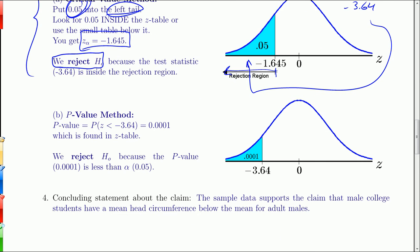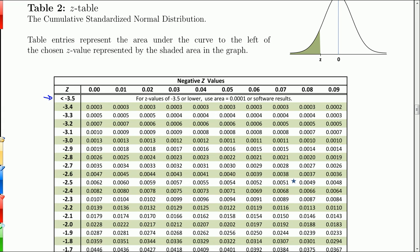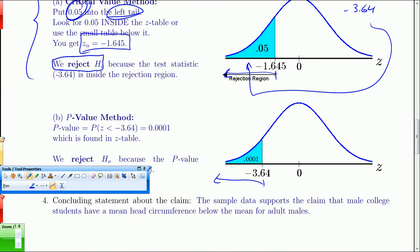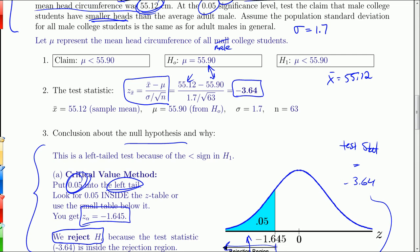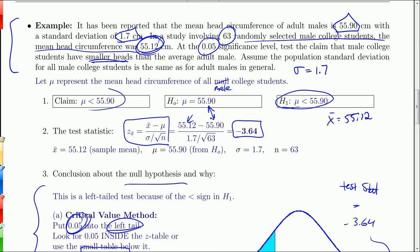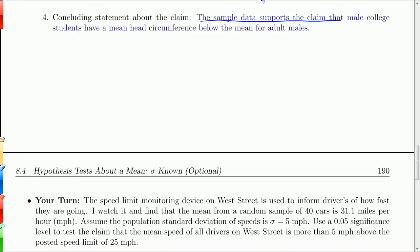You can also look for the p-value. If you look for negative 3.64 in the z-table, this area to the left gives you the probability of getting a z-score below that. And when you look for negative 3.64 in the z-table, what you find is you're in this category here. It's below negative 3.5, so you use an area of 0.0001. So that's really small. It's certainly smaller than alpha, so again we reject the null hypothesis. So that's good for us. Here's our alternate, it supports the claim. We're rejecting the null hypothesis. That means we support the claim because things are looking good for the claim. The sample data supports the claim that male college students have a mean head circumference below the mean for adult males.